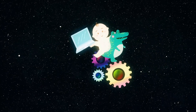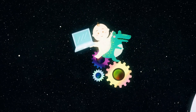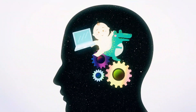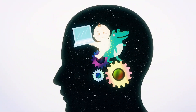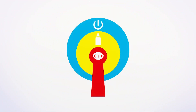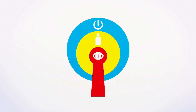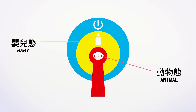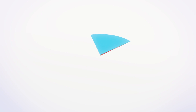In 1952, Dr. Paul D. MacLean proposed the Trinity Brain Theory of Brain Structure, which consists of three interrelated brain structures at different stages of evolution: the reptilian brain, the limbic system, and the neocortex.